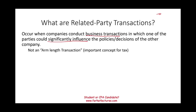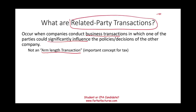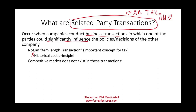We use the term arm-length transaction. When we buy and sell, we assume it's an arm-length transaction — the parties are not related, meaning the transaction is based on fair value. What you're paying is a fair price. This concept is also covered in tax. Related party transactions are covered in FAR, tax (regulation), and audit — a very important topic in the real world. If a transaction is not arm-length, not based on fair value, you've already violated the historical cost principle. Competitive market conditions for a related party transaction simply don't exist.